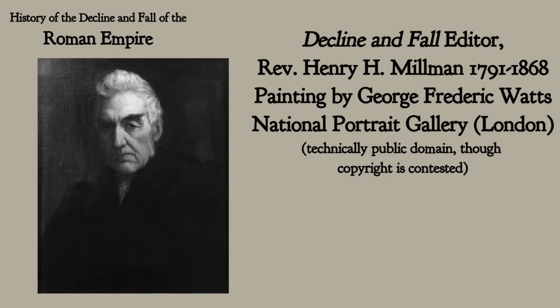Gibbon started with three volumes going from the good emperors to the fall of Rome to the barbarians in 476 AD. At the end of the third volume he wrote kind of a summary and epilogue, but he decided later he was not done and had to write about the Eastern Empire, which carried on the Roman tradition.